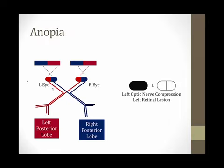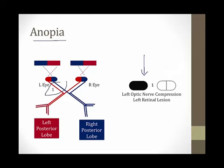Now I'm going to go through lesions of the different portions of the visual system and talk about the visual field defects they produce. The first visual field defect we'll discuss is anopia — the easiest visual field defect to understand. It results in complete vision loss in one eyeball, where one eyeball will be completely black and the other completely normal. This occurs when there is a defect in area one — either a defect with the retina picking up light signals or a defect of the optic nerve carrying those light signals away from one eyeball. This can occur with optic nerve compression or a retinal lesion.